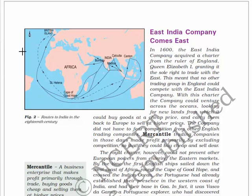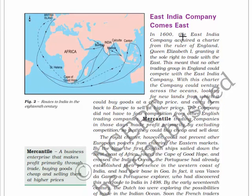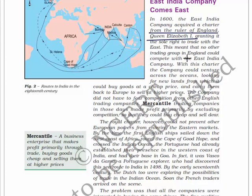Now, something about the East India Company. Here is the British island, the African continent, and the Indian subcontinent, showing the route via the Cape of Good Hope to Calicut, Madras, and Bombay. In the 16th century, the East India Company acquired a charter from the Queen of England, Elizabeth I, granting it the sole right to trade with the East. This meant no other trading group in England could compete with the East India Company, allowing it to venture across oceans seeking goods at cheap prices to sell in Europe at higher prices.